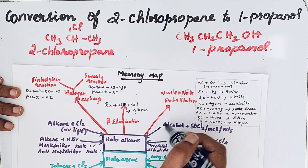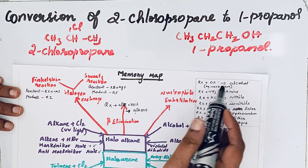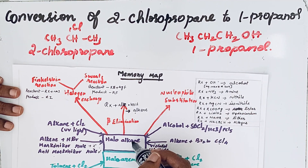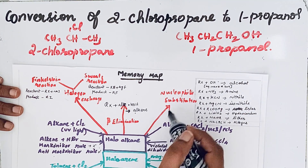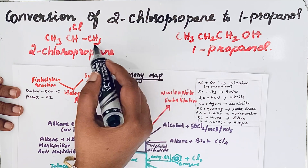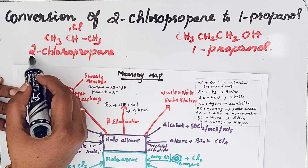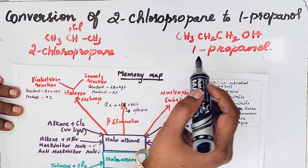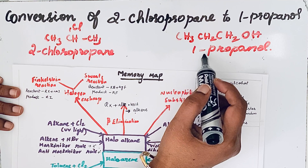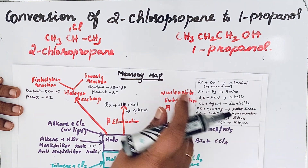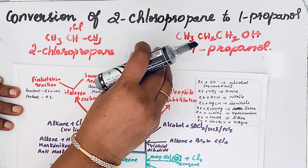In this memory map, you can see that alcohol can be derived from haloalkanes by nucleophilic substitution. But looking at the question more carefully, the positions differ — 2-chloropropane and 1-propanol. Direct conversion of the haloalkane to the alcohol cannot be achieved by this method alone.